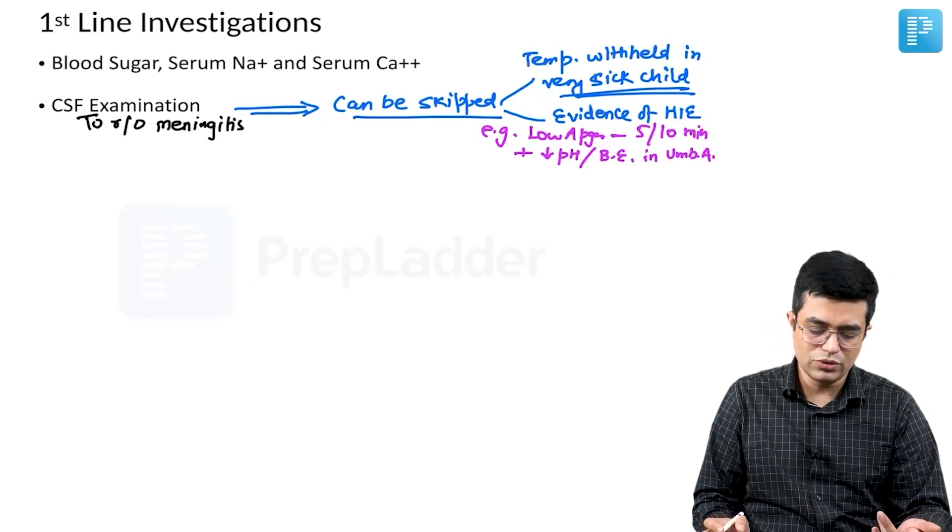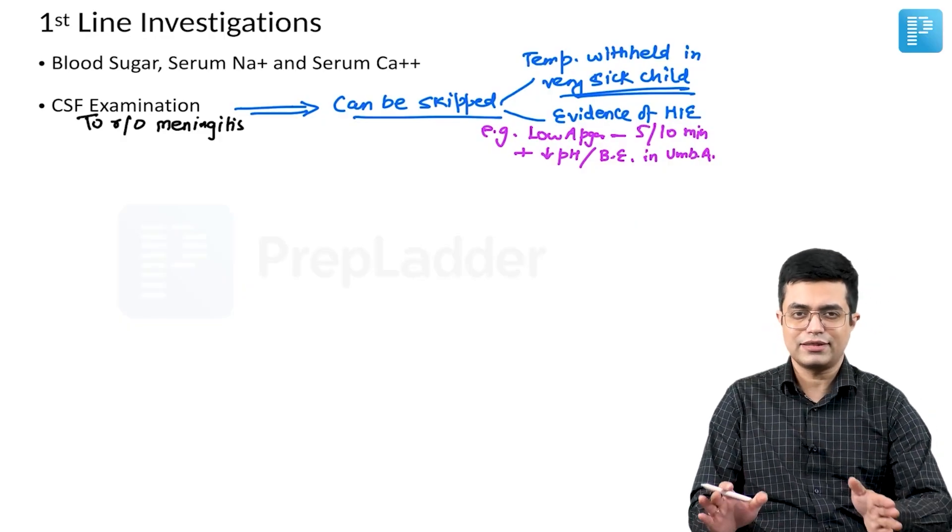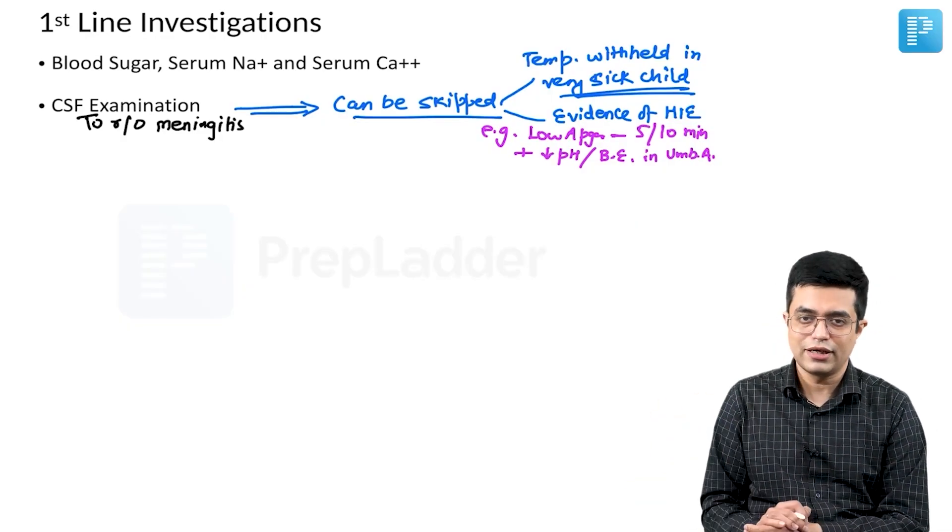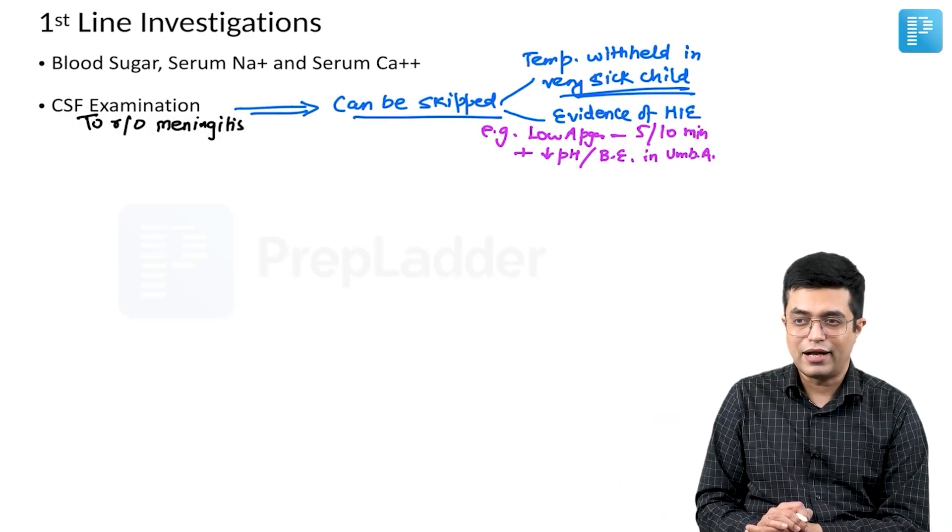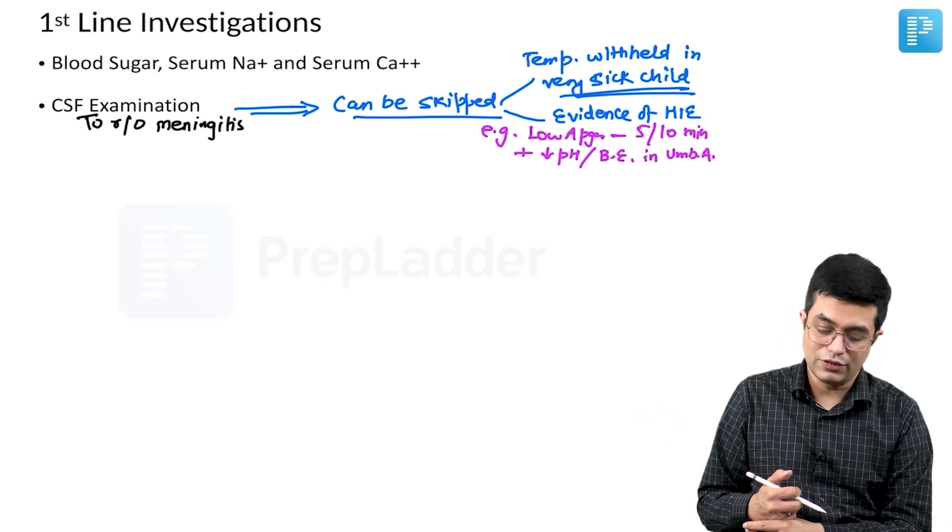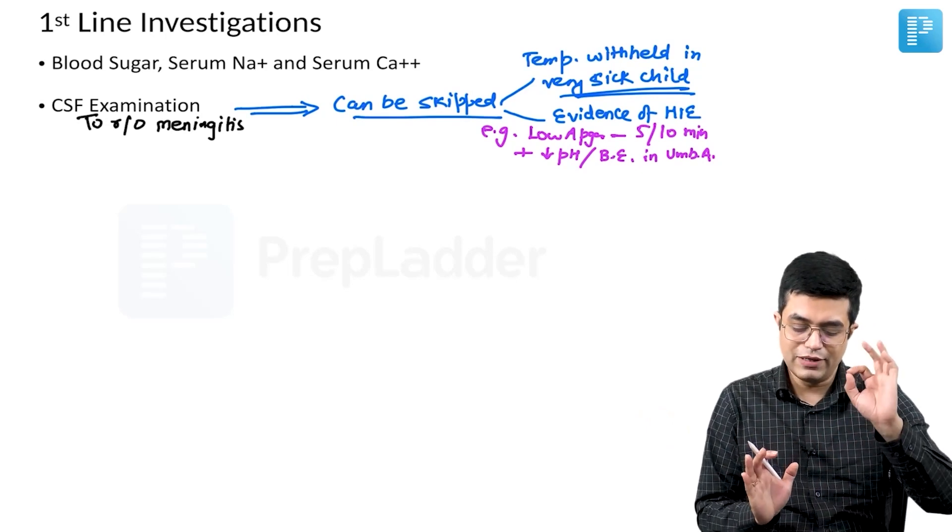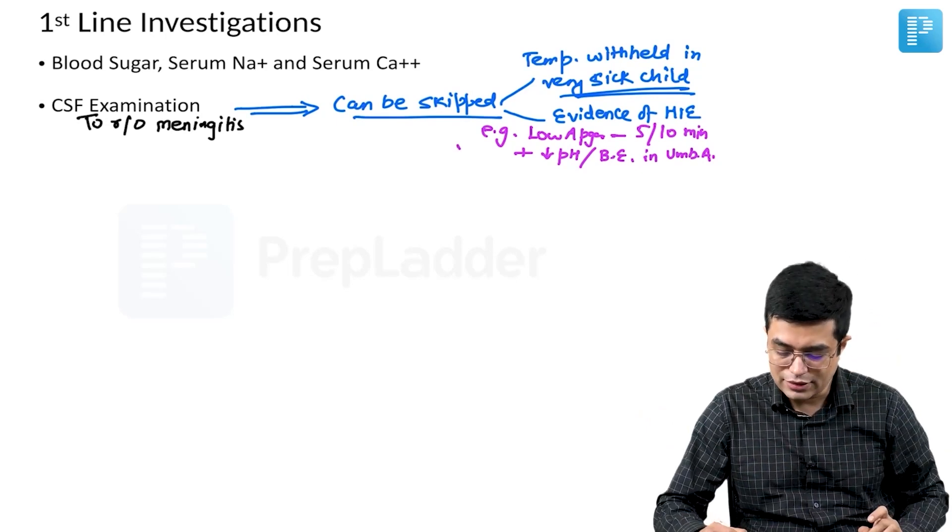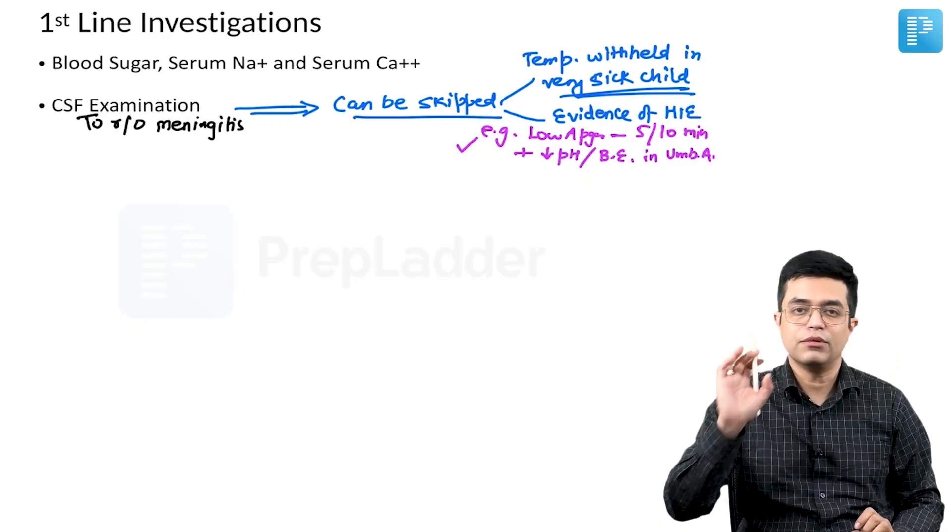If such evidence is present, then obviously you do not need to go in for CSF examination unless there is something else which tells you that it is unlikely to be HIE and additionally a component of meningitis will be there. CSF examination will be needed in all except proven HIE in the patient.